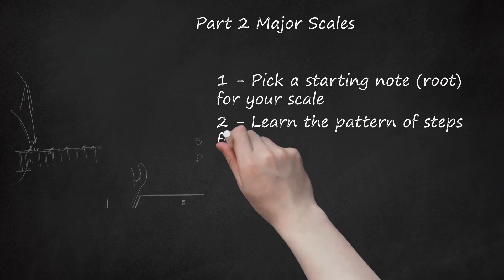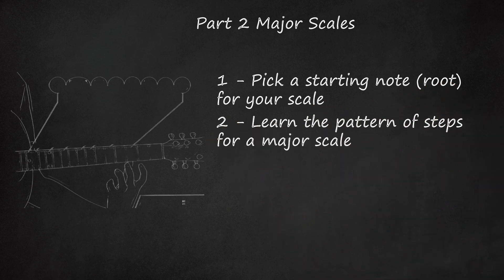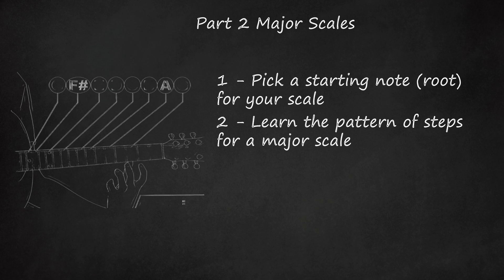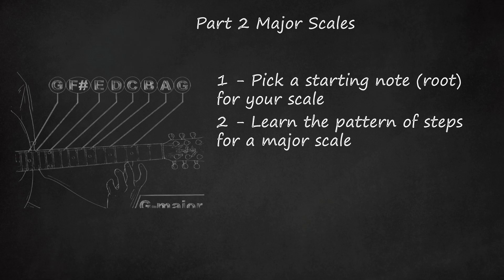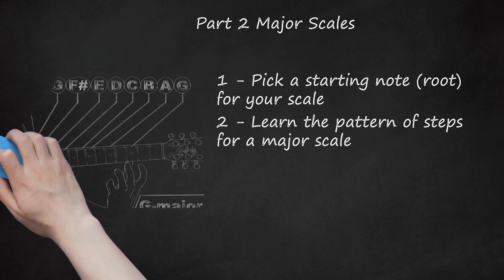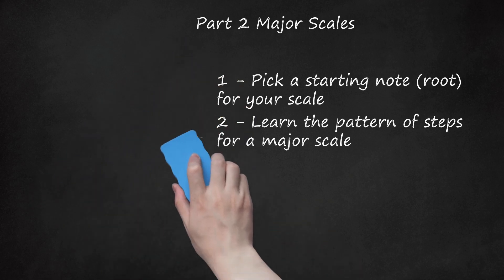Learn the pattern of steps for a major scale. All scales can be written as patterns of whole and half steps. The step pattern for a major scale is: whole step, whole step, half step, whole step, whole step, whole step, half step. For example, starting on G, first we'd move up one whole step to A, then another whole step to B, then a half step to C. Following the pattern, we continue up the scale playing D, E, F-sharp, and ending on G.